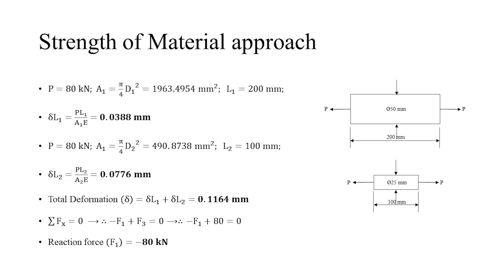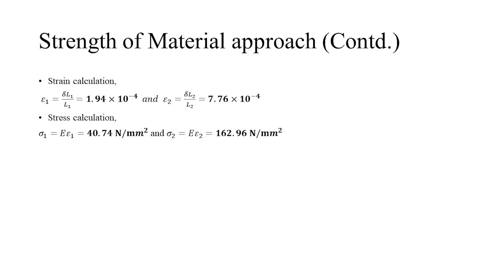Now we will look at the strength of material approach, in which each bar is treated individually under equilibrium conditions and deformation is found using the appropriate formula. The total deformation is the addition of the individual deformations. To find force reaction, we apply force balance. Strain is calculated as change in length relative to original length, and stress is calculated using Hooke's law.